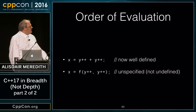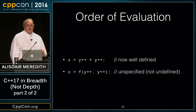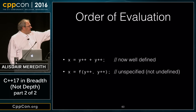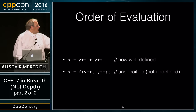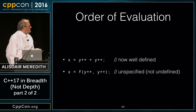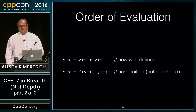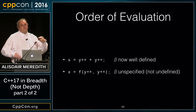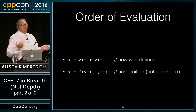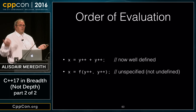A quick example: `x = y++ + y++` is now well-defined — you increment y and then add that to incrementing y in exactly the order you see. Whereas calling `f(y++, y++)` is no longer undefined behavior; it will do something well-defined at the language level, though you don't know which values the two arguments will have because the evaluation order of the two y++'s is unspecified.